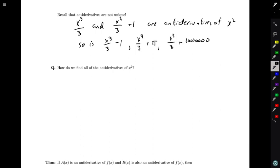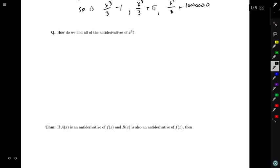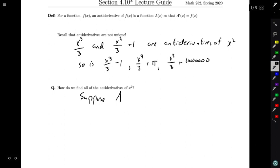So maybe we want to take a look at this and we want to think, well, let's suppose A(x) and B(x) are antiderivatives of x².